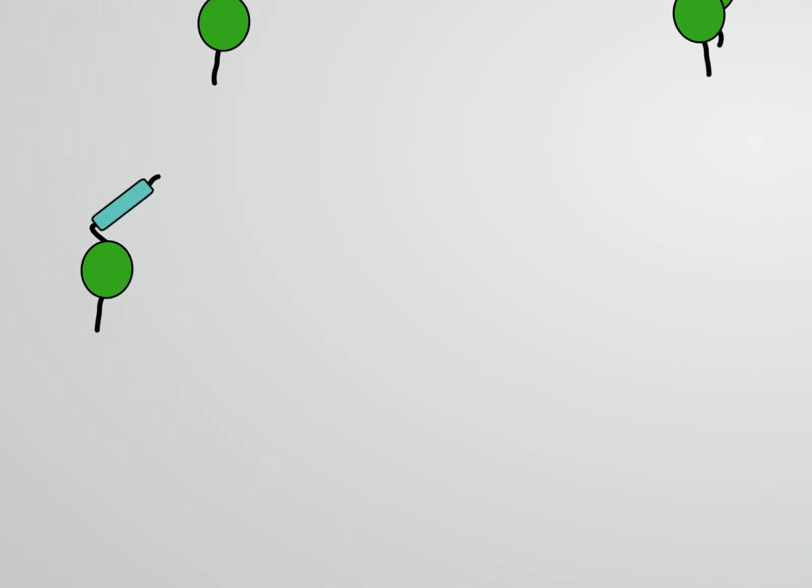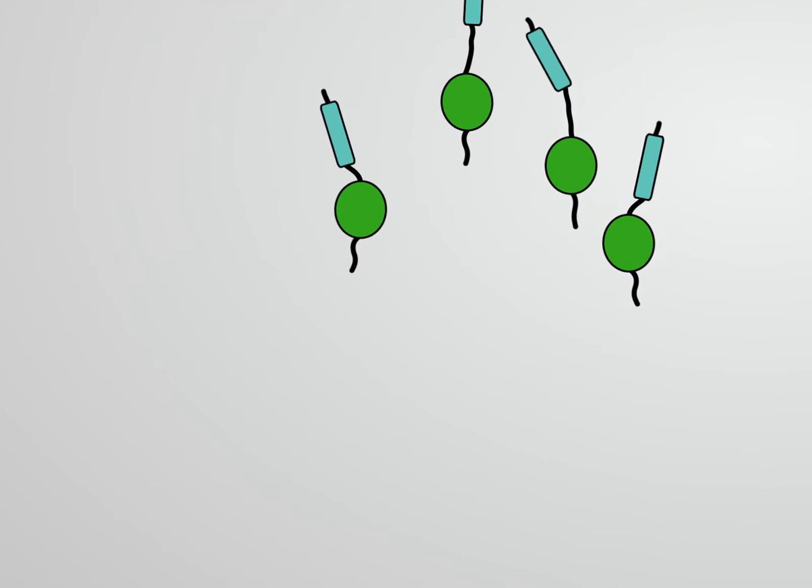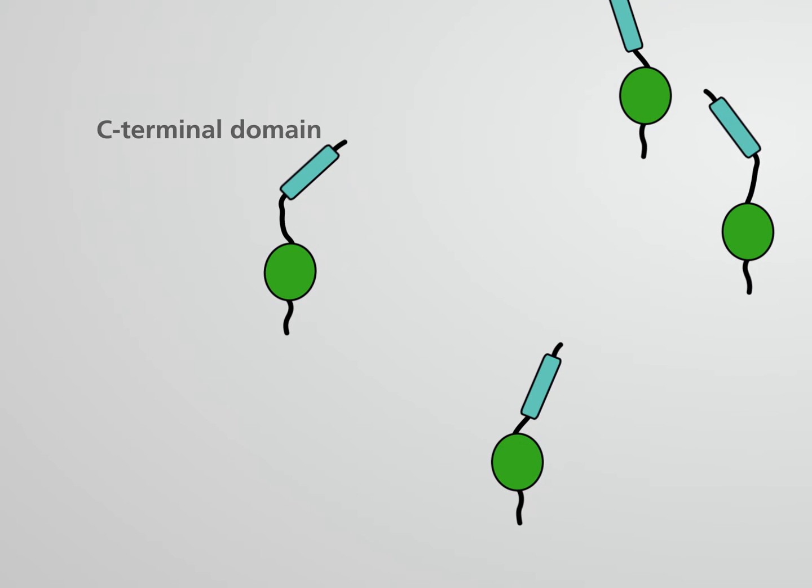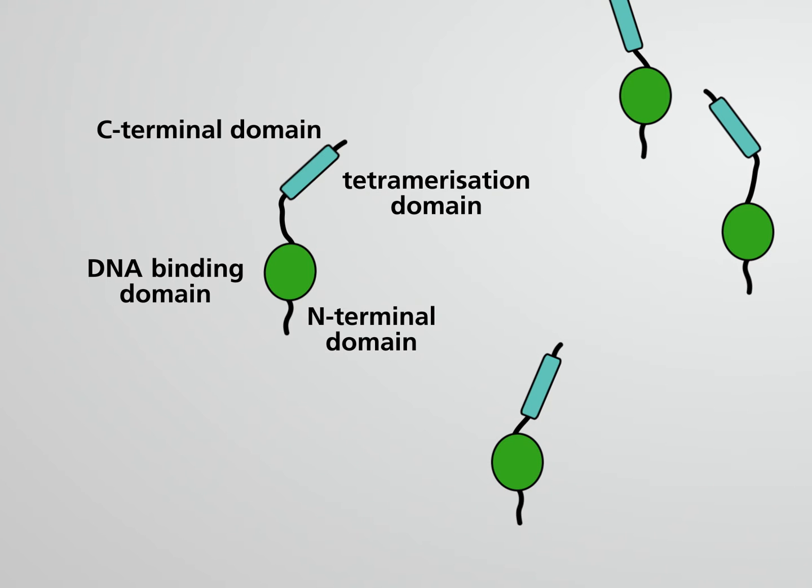P53 is a transcription factor which consists of four subunits. A subunit contains a C-terminal regulatory domain, a tetramerization domain, a DNA-binding domain, and an N-terminal transactivation domain.